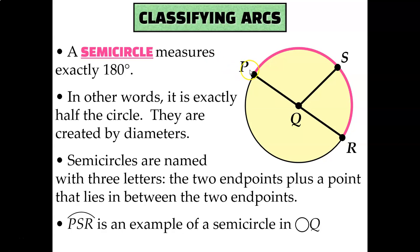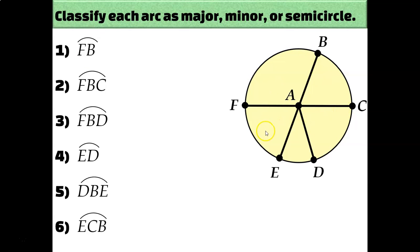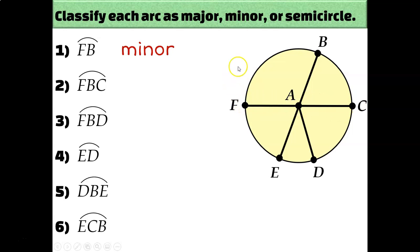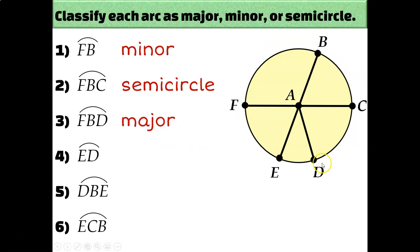Semicircles are also named with three letters, so arc PSR would be considered a semicircle. Let's classify each arc in the diagram as major, minor, or semicircle. Arc FB has only two letters, so it must be minor — and looking at the diagram, it's less than half the circle. Arc FBC is half the circle since FC is a diameter, so FBC is a semicircle. Arc FBD goes more than 180 degrees, so FBD is a major arc.